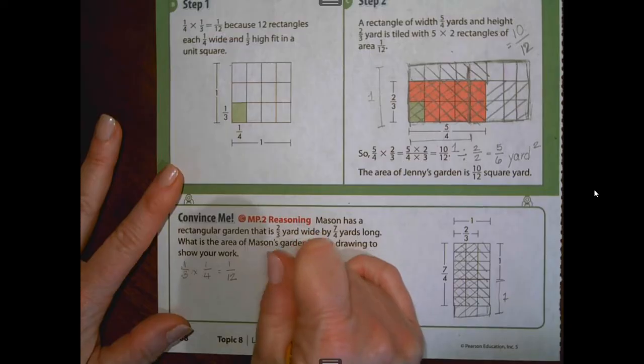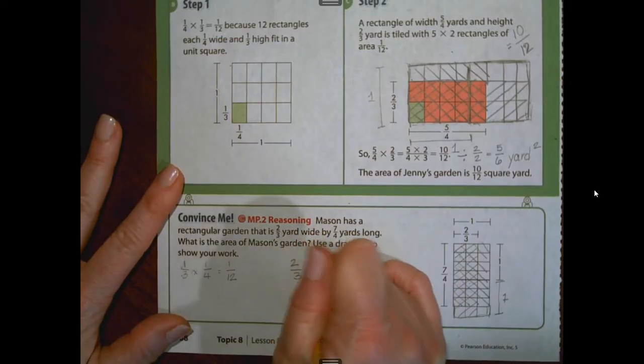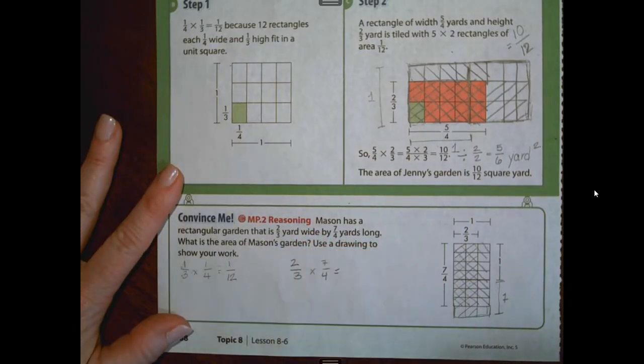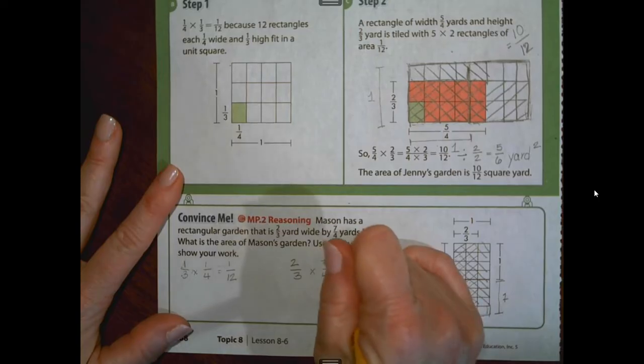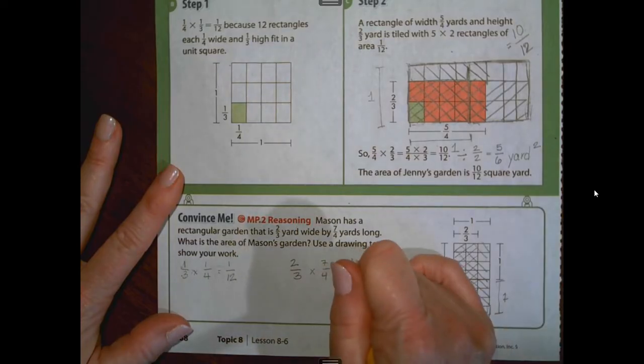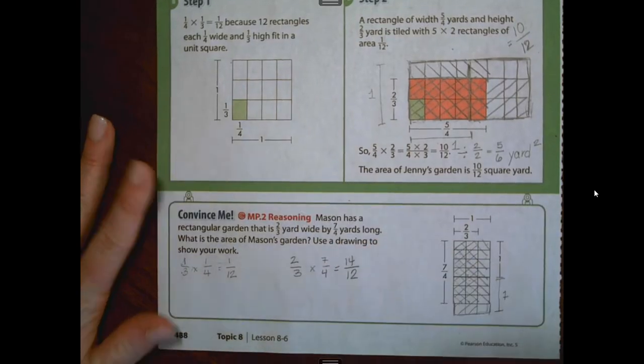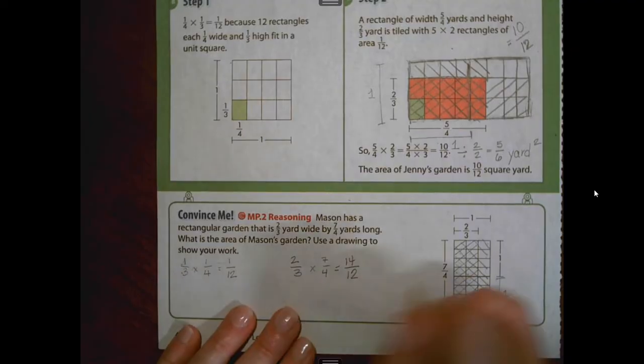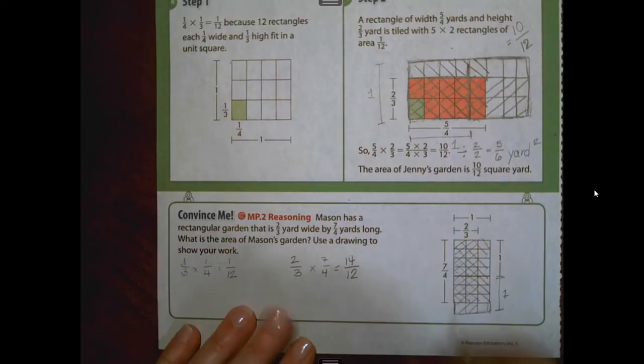So two-thirds times seven-fourths. I just said I saw 14 shaded areas and there are 12 one-twelfths in each of these wholes. So there are 14 one-twelfth pieces or 14 twelfths of a square yard. But wait a minute. That right there is an improper fraction. So to put it in terms we understand, let's convert it.